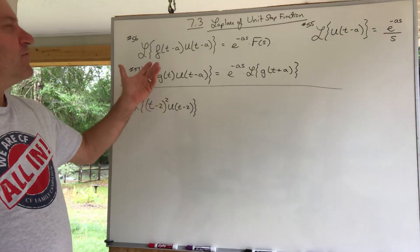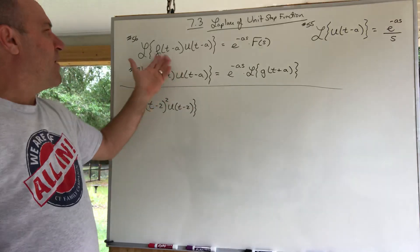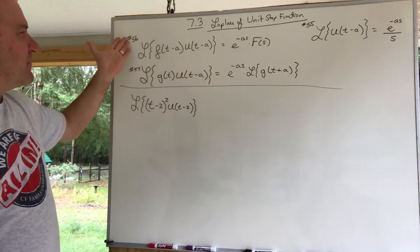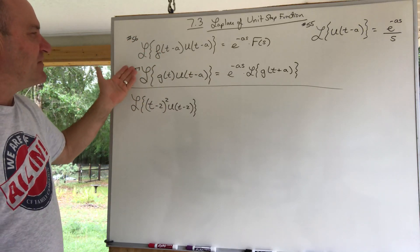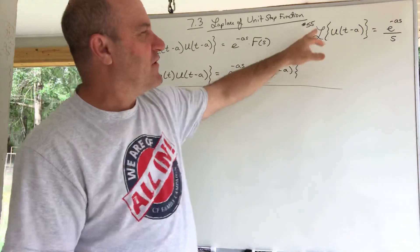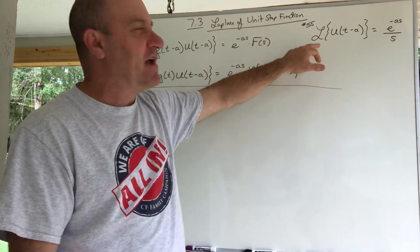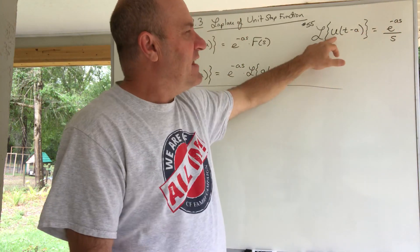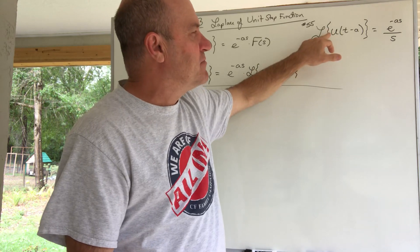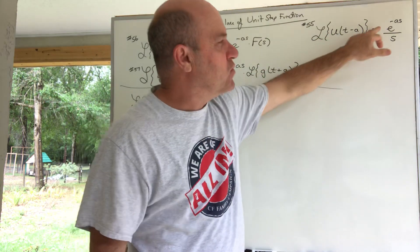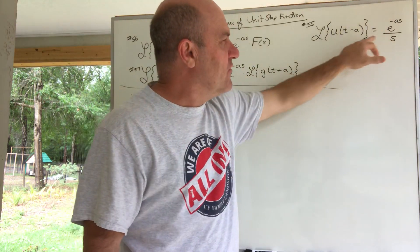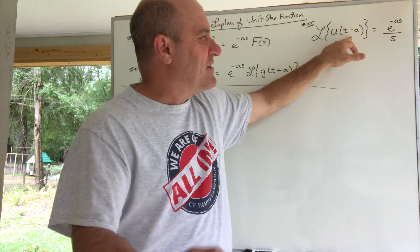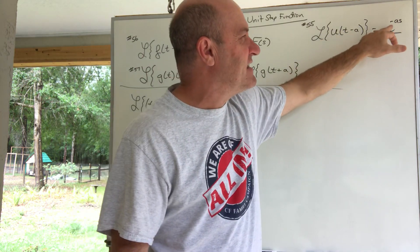As previewed in the last video, to find the Laplace of a function with a unit step function attached, we use rules 56 and 57. Rule 55 covers just the unit step function by itself: it's e to the negative as, and since it's like the Laplace of 1, you get 1 over s. So the Laplace of u(t-a) is e to the negative as times 1 over s.